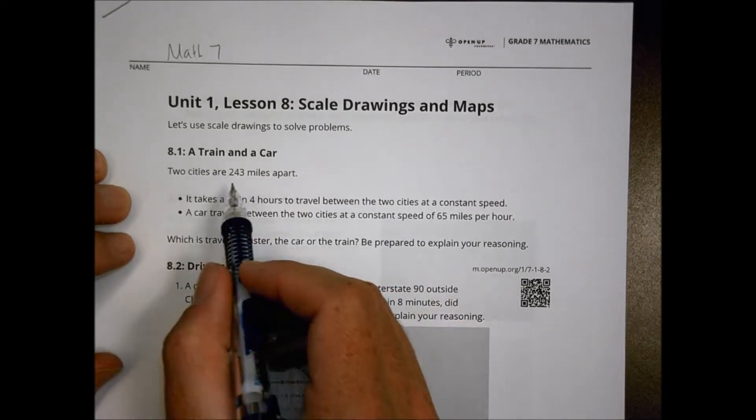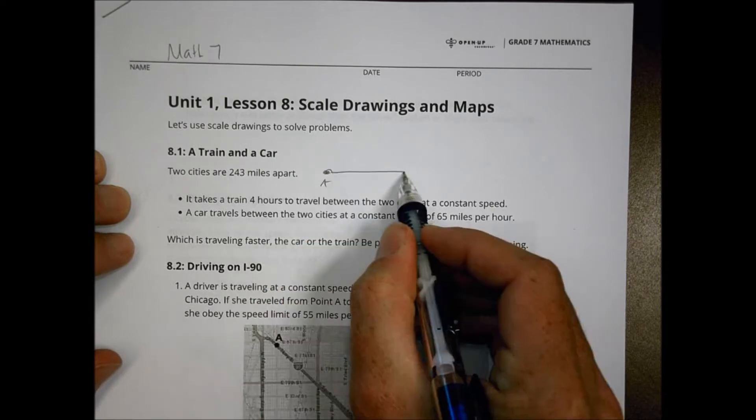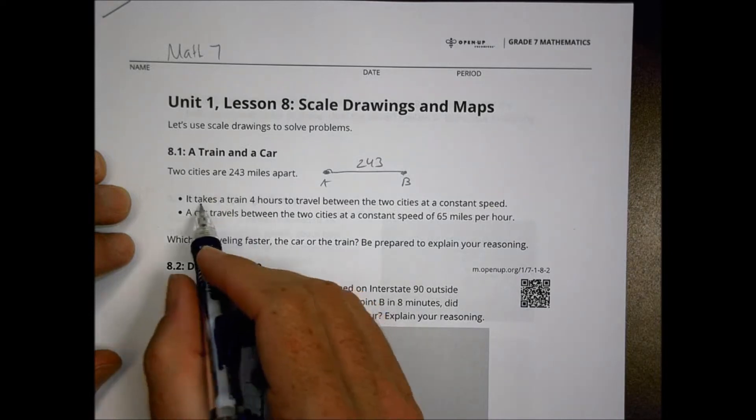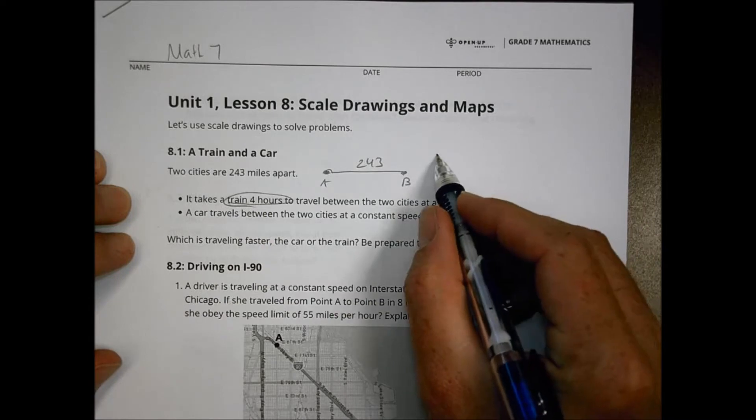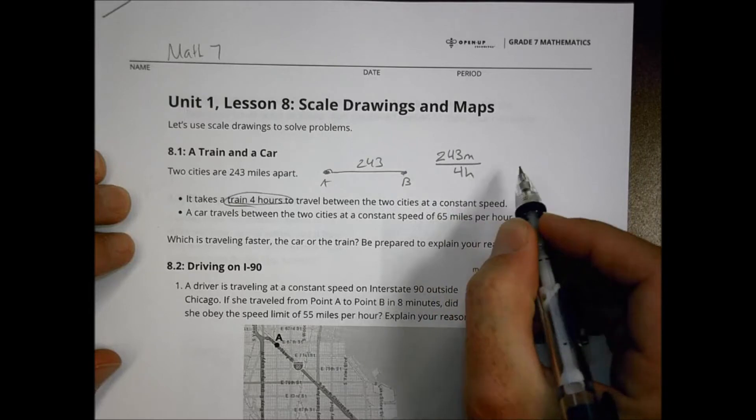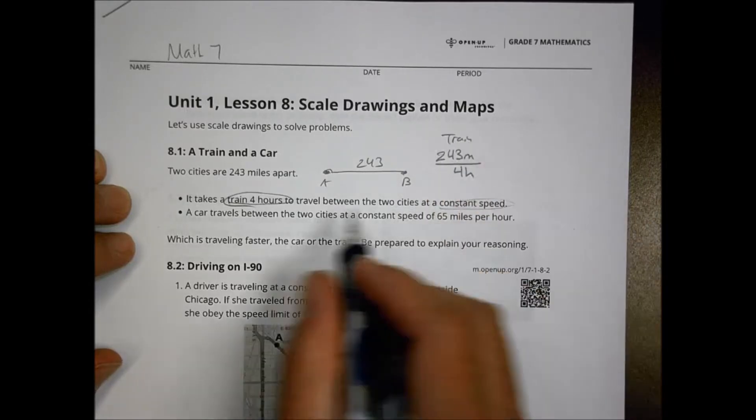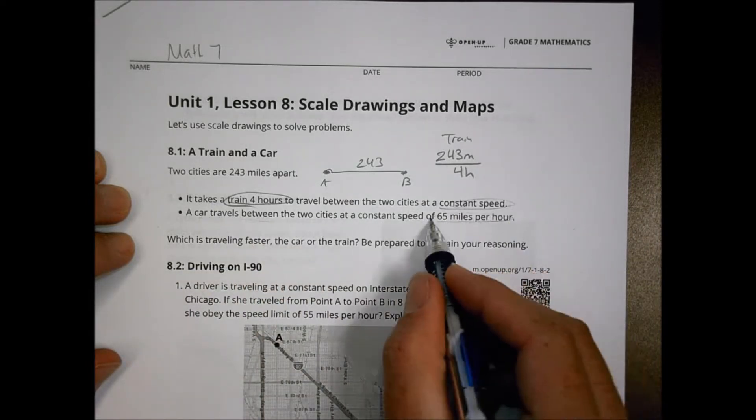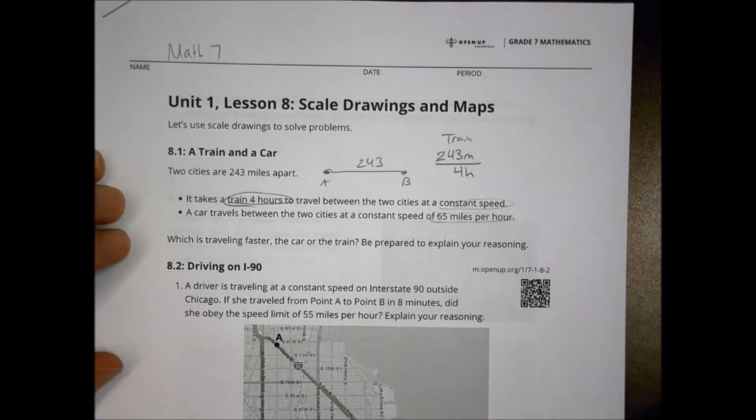You began a little warm-up of a train and a car situation where you had two cities, City A and City B, that were 243 miles apart from one another. And it said it takes a train four hours to travel between those two cities. So in essence we could say it's 243 miles are happening within four hours. That's kind of its constant speed there for the train.